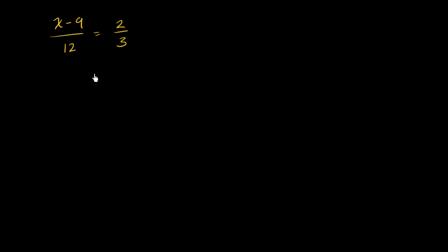Now, there's a bunch of ways that you could do it. A lot of people, as soon as they see a proportion like this, they want to cross multiply. They want to say, hey, 3 times x minus 9 is going to be equal to 2 times 12. And that's completely legitimate. Let me write that down. So 3 times x minus 9 is equal to 2 times 12.